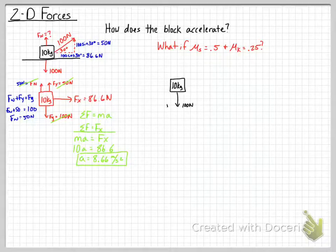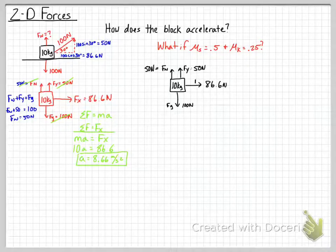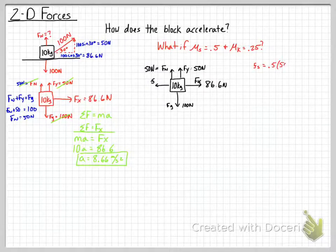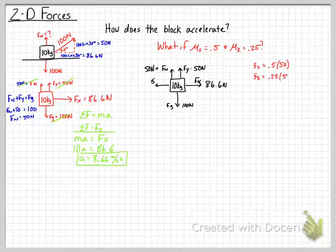We have the same 10-kilogram object with 100 newtons of weight down, a vertical tension force of 50 newtons, a normal force of 50 newtons up, a horizontal tension force of 86.6 newtons, and an unknown frictional force. The first thing is to compare to static friction: 0.5 times the normal force of 50 newtons gives static friction of 25 newtons. Kinetic friction is 0.25 times 50, which equals 12.5 newtons. This is why we use normal force for friction — the tension pulling up has lightened how hard the surface needs to push back.